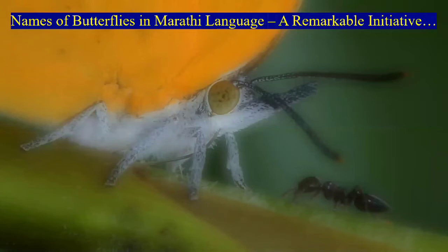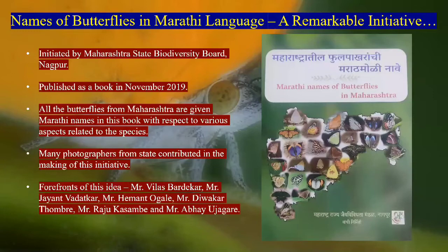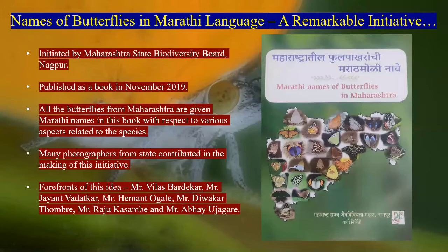A remarkable initiative taken in Maharashtra is naming butterflies in the state language — Marathi. This initiative was taken by the Maharashtra State Biodiversity Board. The book Maharashtra Til Phulpakhranchi Marathi Moli Nava was published in November 2019, giving all butterflies present in Maharashtra unique Marathi names.